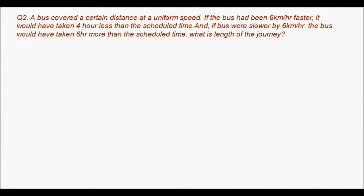Question number 2: a bus covered a certain distance at a uniform speed. If the bus had been 6 km/h faster it would have taken 4 hours less. In the second case, if the bus were slower by 6 km/h, the bus would have taken 6 hours more. In both cases, the distance is the same while only the speed varies.